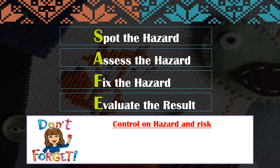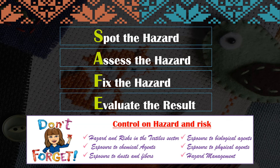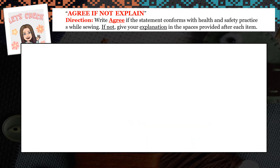Don't forget the control of hazard and risk: hazard and risk in the textile sector, exposure to chemical agents, exposure to dust and fibers, exposure to biological agents, exposure to physical agents, and hazard management. Let's have an activity to see if you really understood our lesson. Write 'agree' if the statement conforms with health and safety practices while sewing. If not, give your explanation in the space provided after each item.